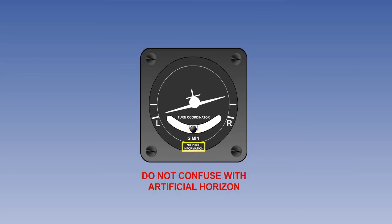Make a note, however, that the aircraft symbol does not indicate the bank angle, but only the direction and rate of turn, and it is not to be confused with the artificial horizon, which it can resemble in appearance.